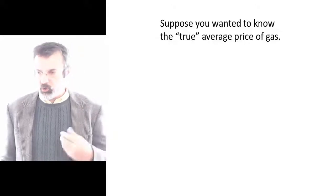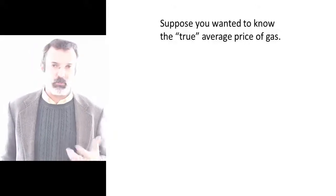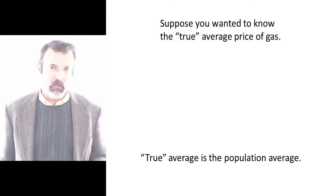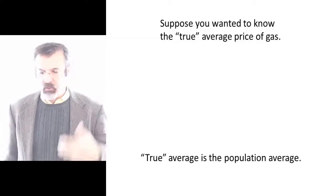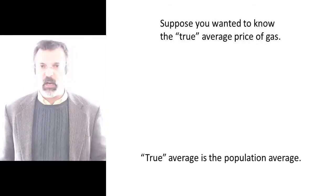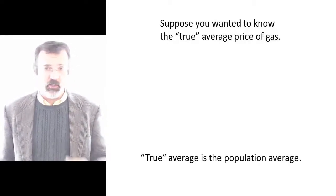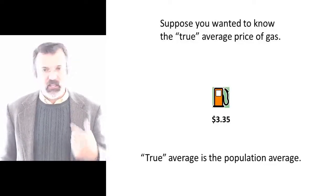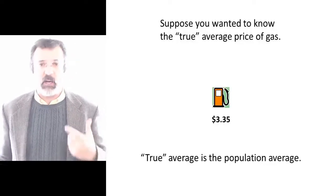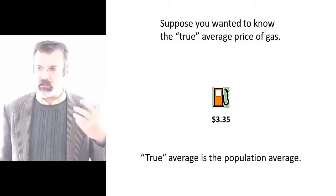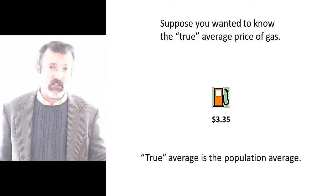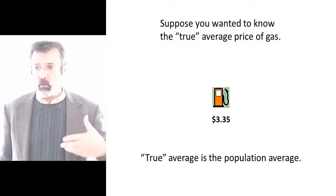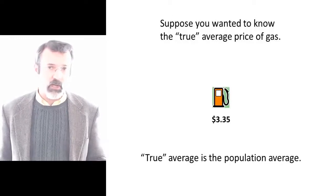Suppose we want to know the true average price of gas — that is, the population mean. So we walk down to the corner gas station and see that the price of gas there is $3.35 a gallon. We know that can't be the true average price of gas because this is the price we observed at one gas station, and there are going to be other gas stations that charge other prices.